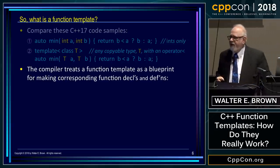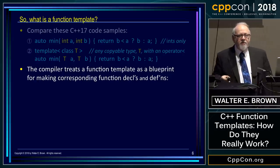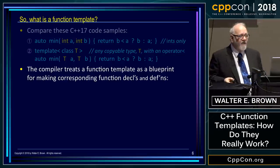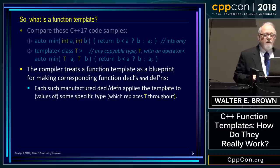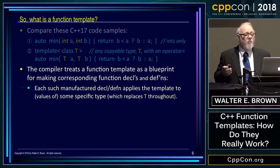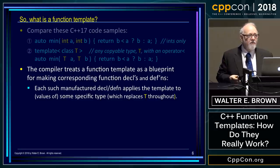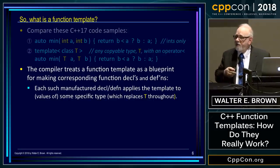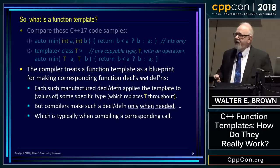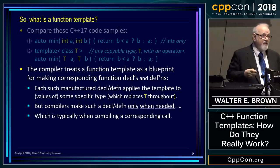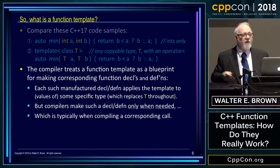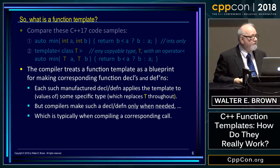A compiler will treat a function template just like a builder treats a blueprint. Builders use blueprints to make homes and other kinds of buildings; compilers use blueprints to make function declarations and definitions. Each one applies whatever you have written in the template's definition to a specific type, and that specific type replaces wherever you have used the placeholder. Importantly, compilers don't do this willy-nilly — they do this when and as necessary, typically because there is a call in the client code and the compiler needs a function to call.